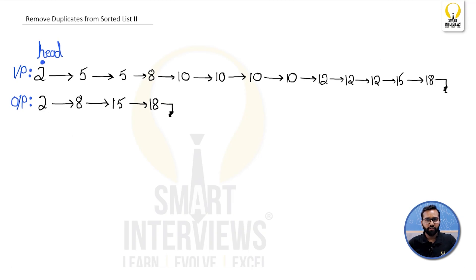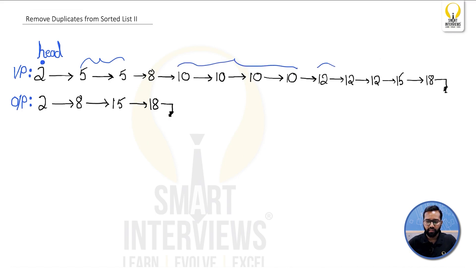Let's understand the problem better with a custom example. Say you are given a linked list where 5 is repeated multiple times, 10 is repeated multiple times, and 12 is repeated multiple times. So 5, 10, and 12 should be deleted from the output. The remaining nodes — 2, 8, 15, and 18 — should remain.